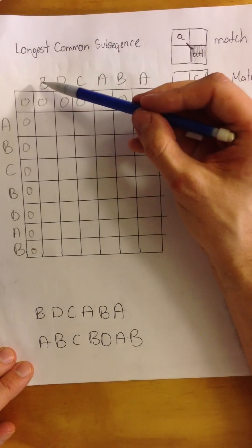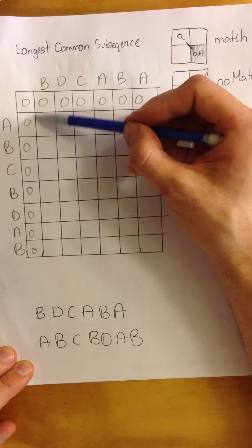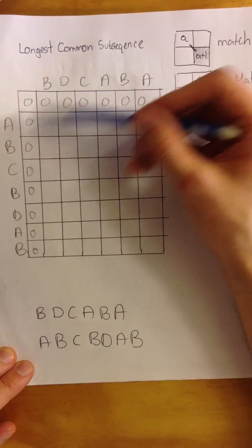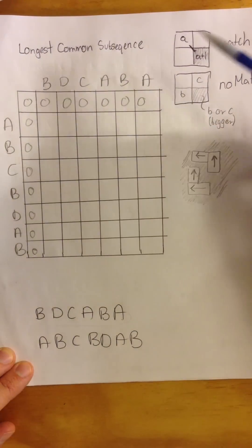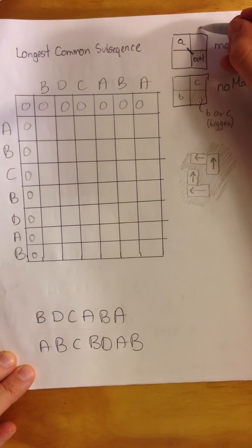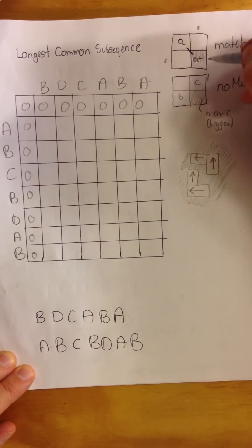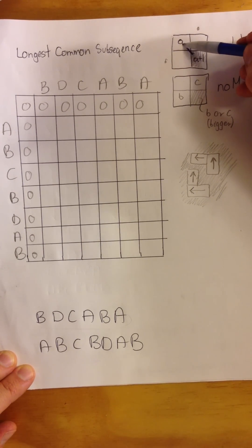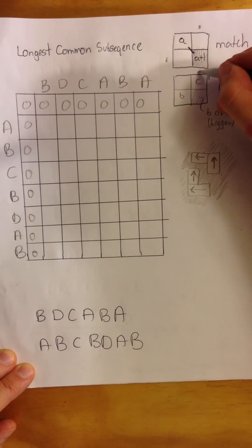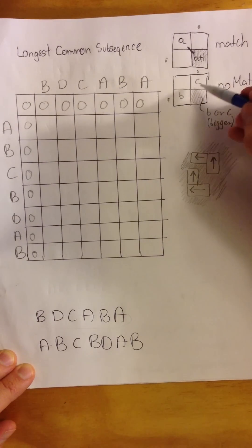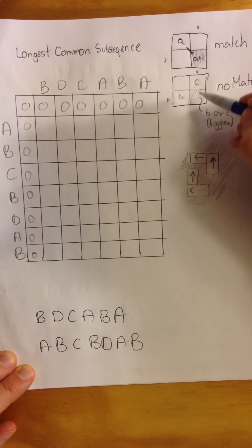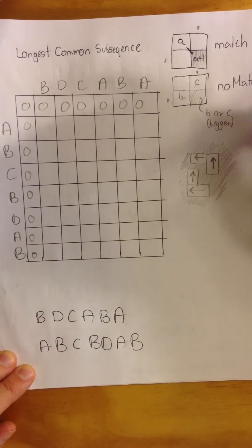This algorithm is all about whether there's a match or not, and there are two cases. We take the x and y value for each cell and compare if there's a match or not. If the values are the same there's a match; if values are different there's no match. If there's a match, we take the number from the diagonal cell, add one, and insert the answer. If there is no match, we consider the left and top values and insert the biggest one.